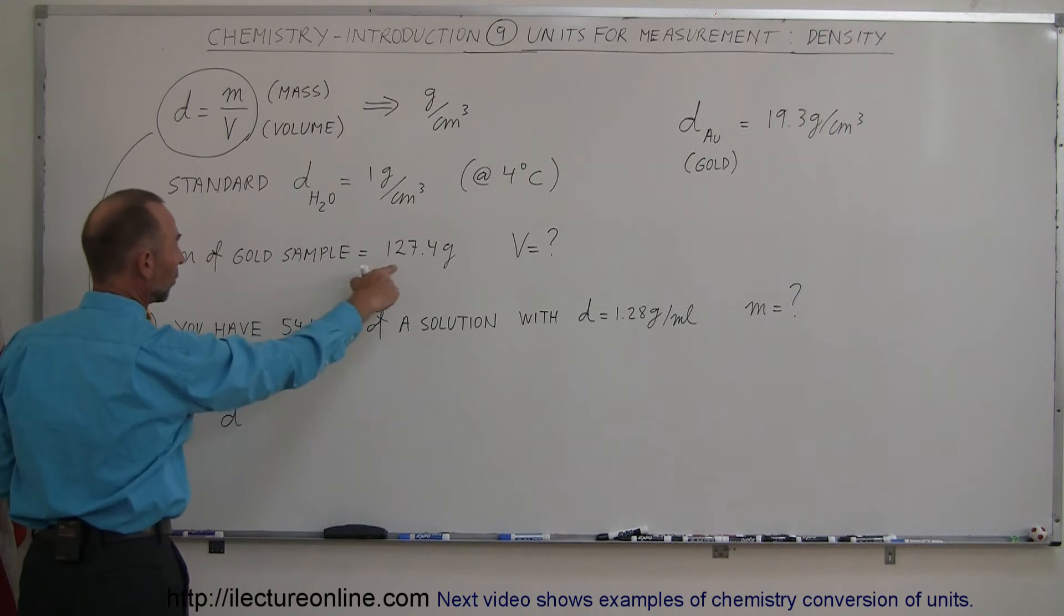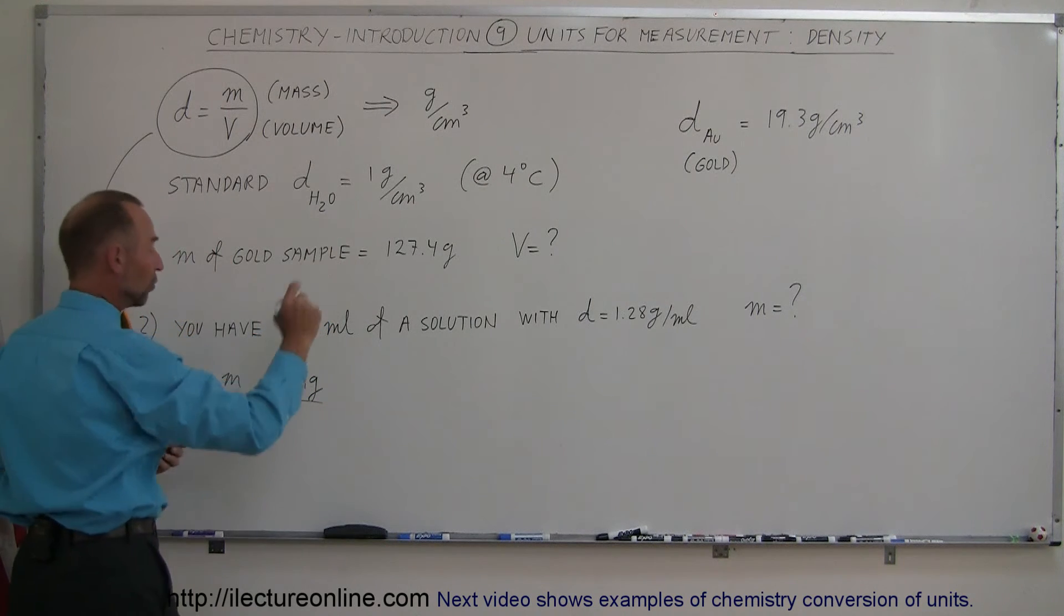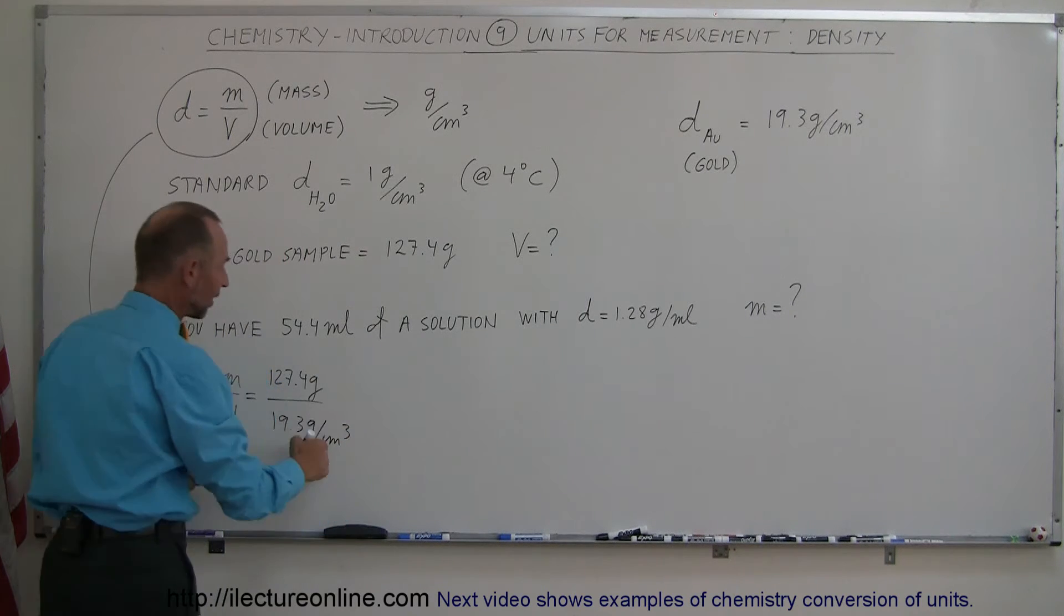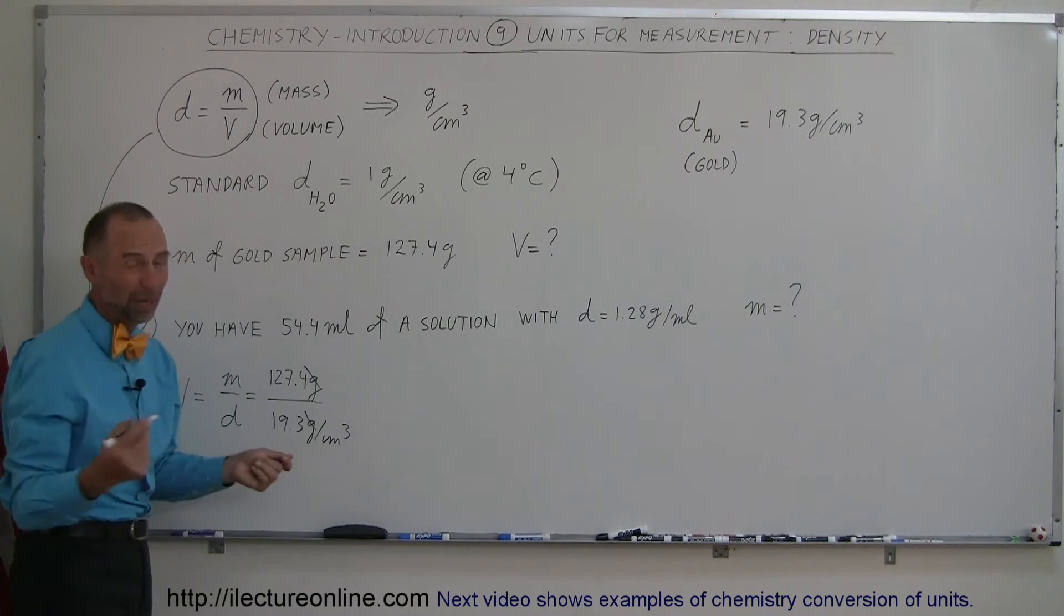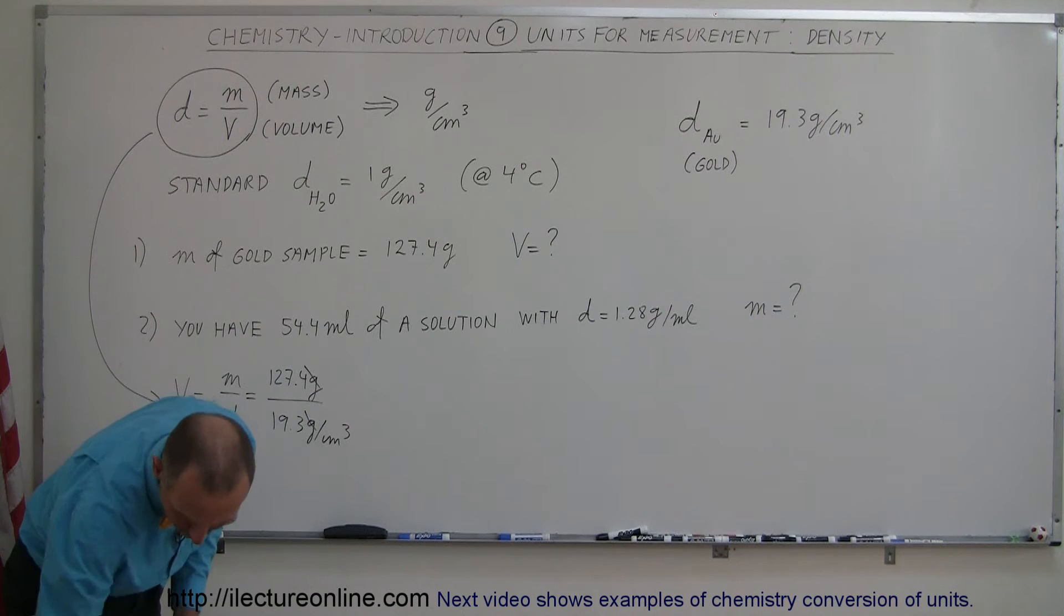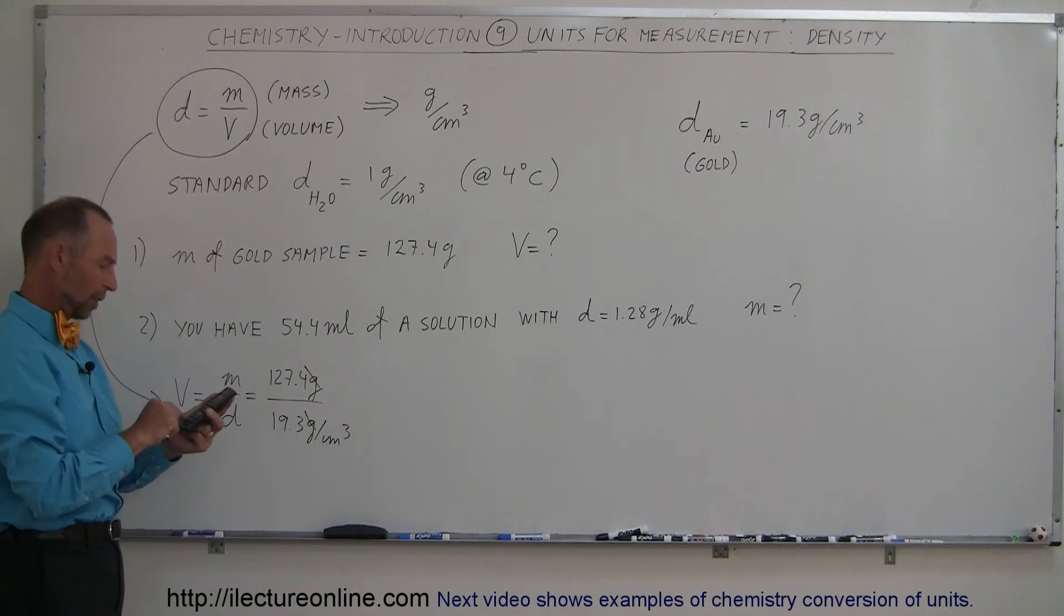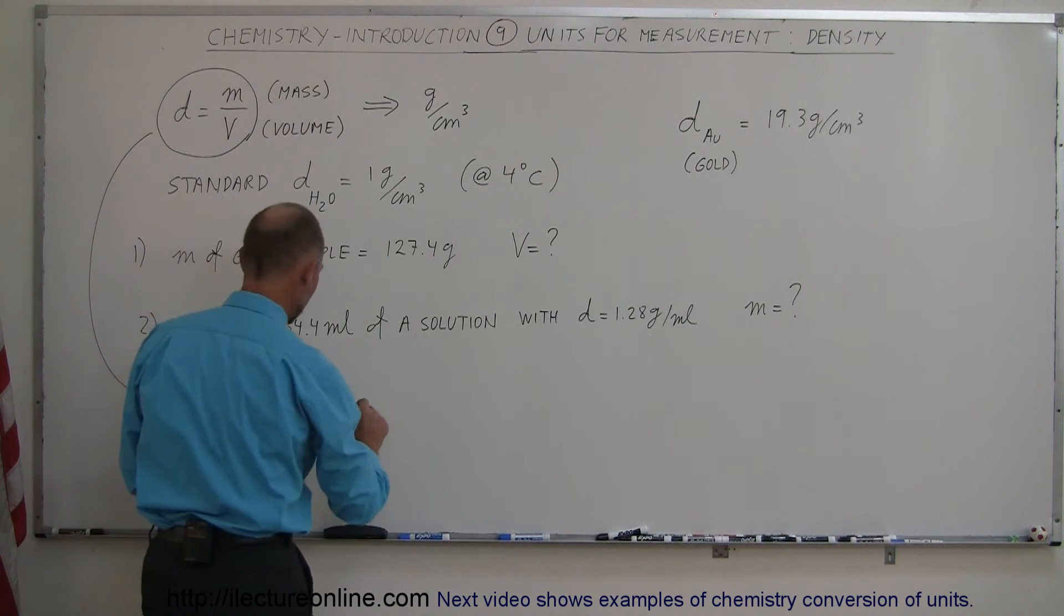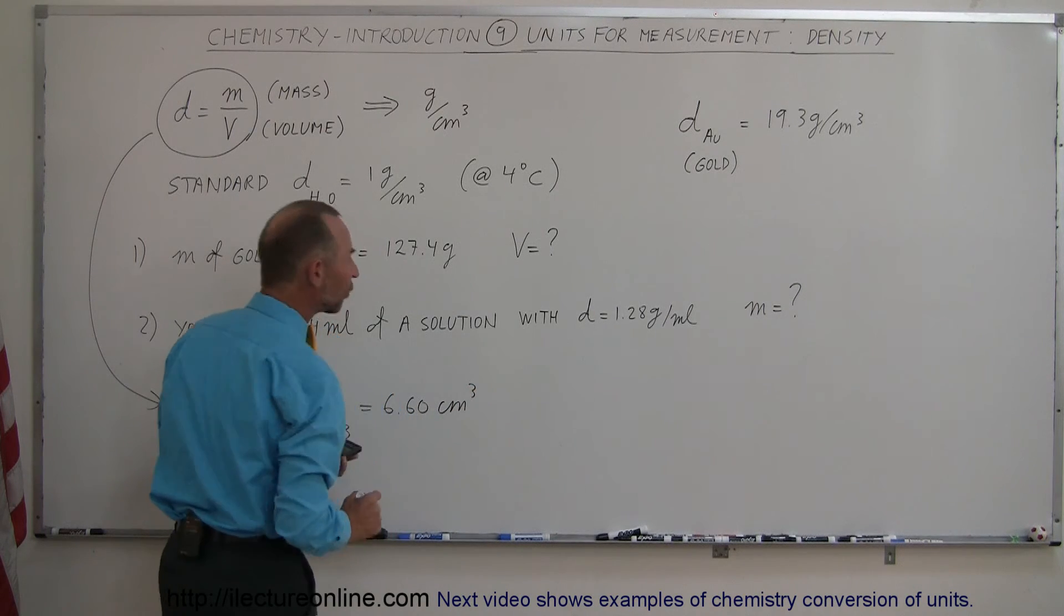The mass is 127.4 grams, and the density is 19.3 grams per cubic centimeter. Notice that the grams cancel out, and dividing by grams per cubic centimeter puts cubic centimeters in the numerator. Unit-wise, we have this correct. Calculating 127.4 divided by 19.3, we get 6.60 cubic centimeters of gold.